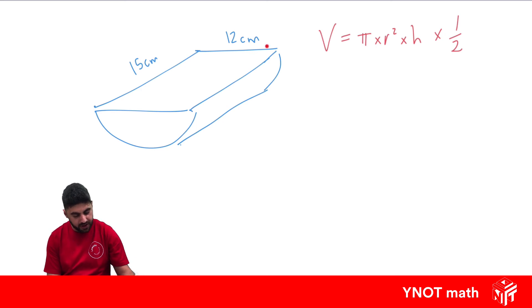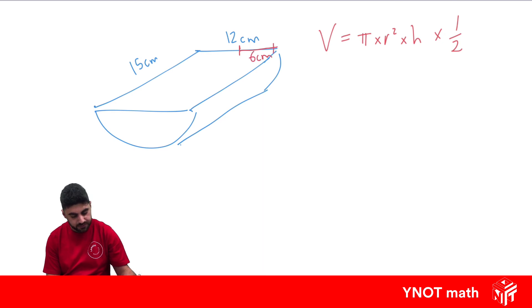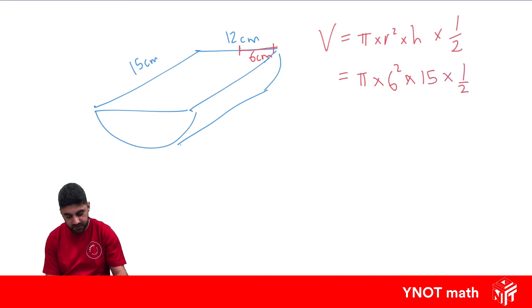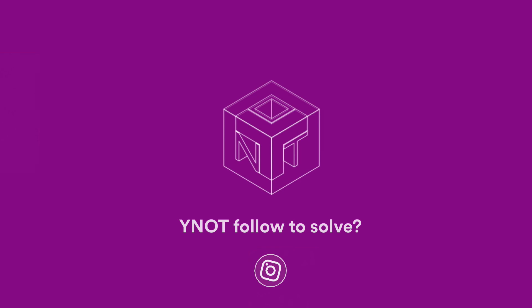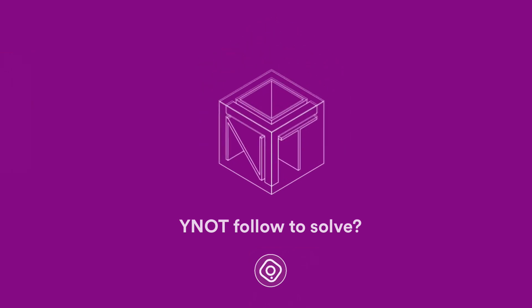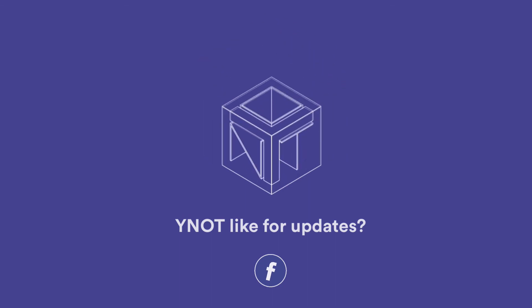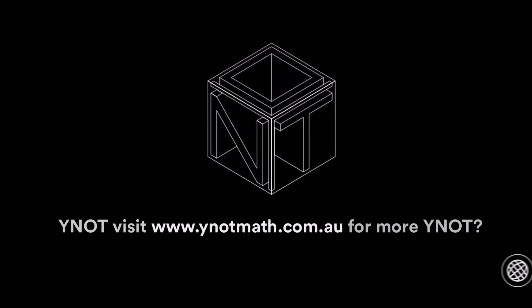The diameter of the circle section is 12, so the radius is half of that, which is 6 centimeters. We work out the volume by doing half times pi times 6 squared times the height, which is 15. That gives us 848.2 centimeters cubed to one decimal place.